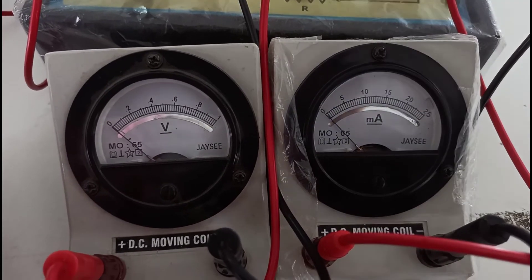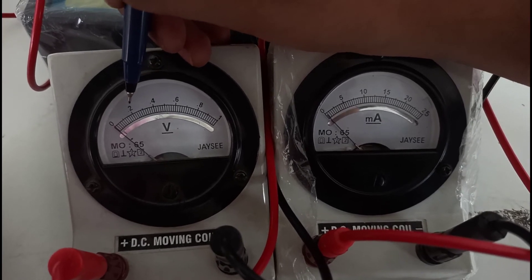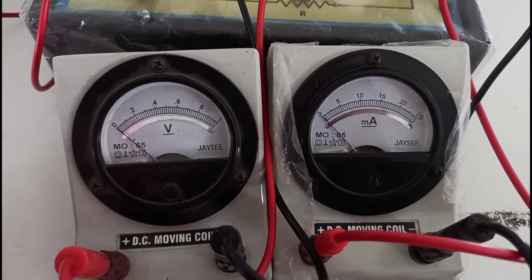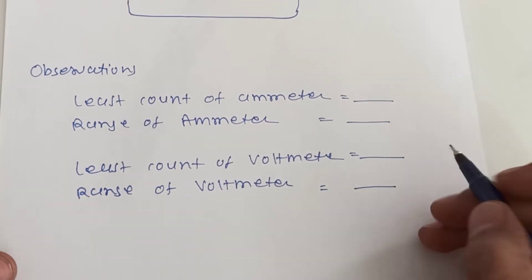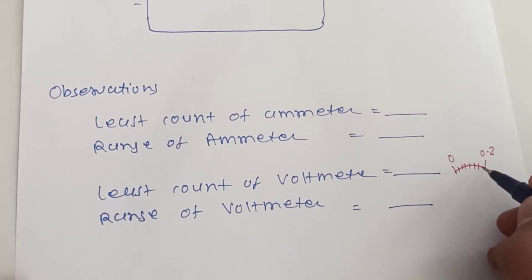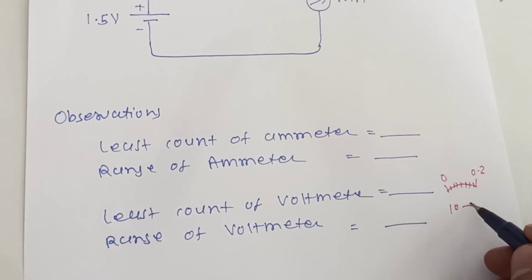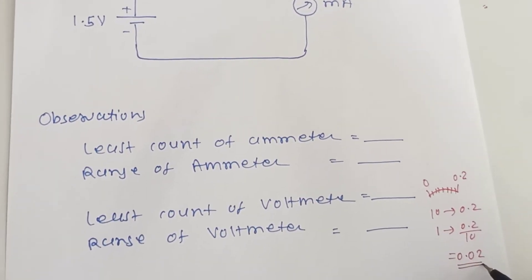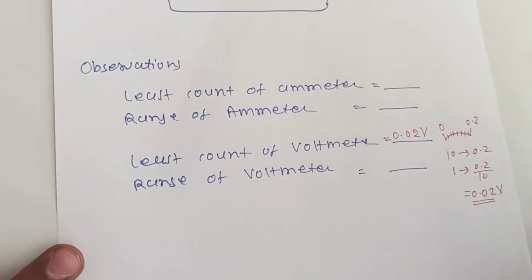Now to find the least count of the voltmeter: from 0 to 0.2, there are 10 divisions between them, so we can write 0.2 divided by 10 is the least count of the voltmeter. The value of 10 divisions is 0.2, so the value of 1 division is 0.2 by 10, which is 0.02 volt. So the least count of the voltmeter is 0.02 volt.